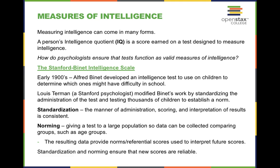IQ stands for an individual's intelligence quotient, and it's one of the first forms of standardized testing. Alfred Binet developed an intelligence test to use on children to determine which ones might have difficulty in school. Louis Terman, a Stanford psychologist, modified Binet's work by standardizing the administration of the test and testing thousands of children to establish a norm. The average IQ is 100, but the average falls within a bell curve — between 85 and 115 is considered the overall average range.